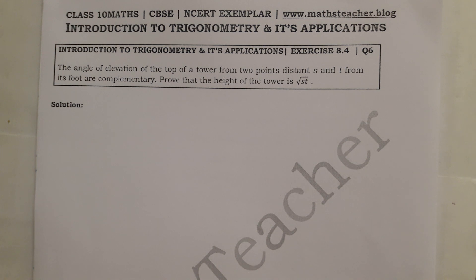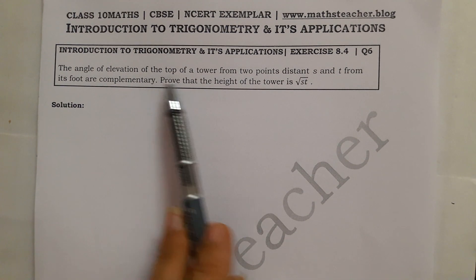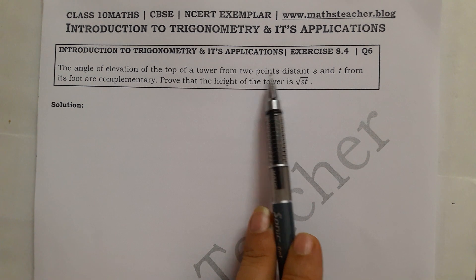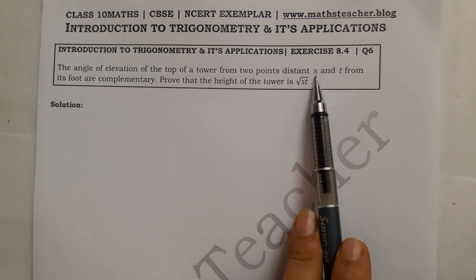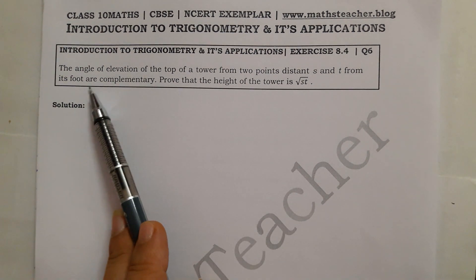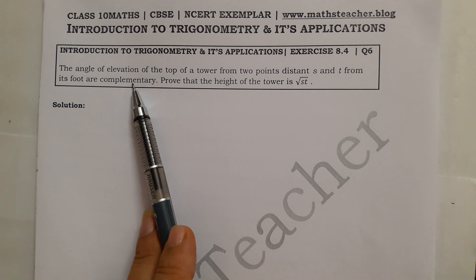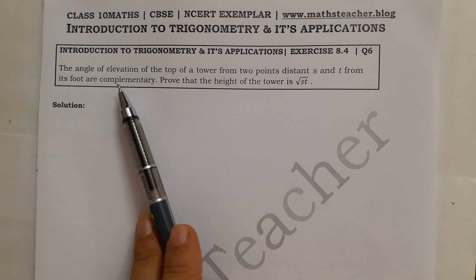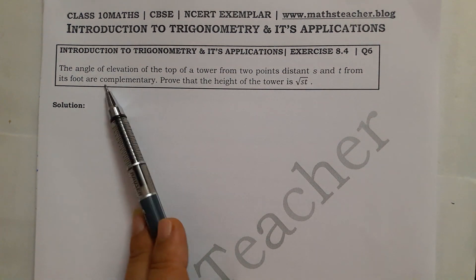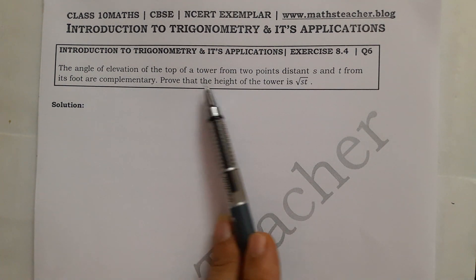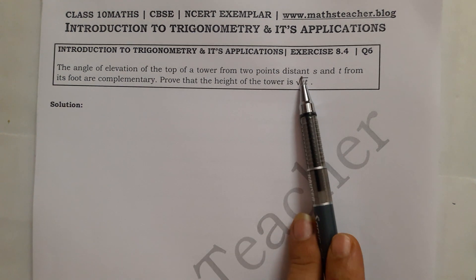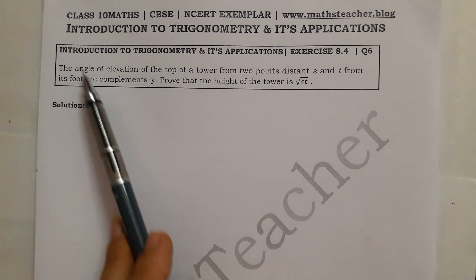The question is: the angle of elevation of the top of a tower from two points at distances S and T from its foot are complementary. Complementary angles are angles whose sum is 90 degrees. We have to prove that the height of the tower is under root ST.